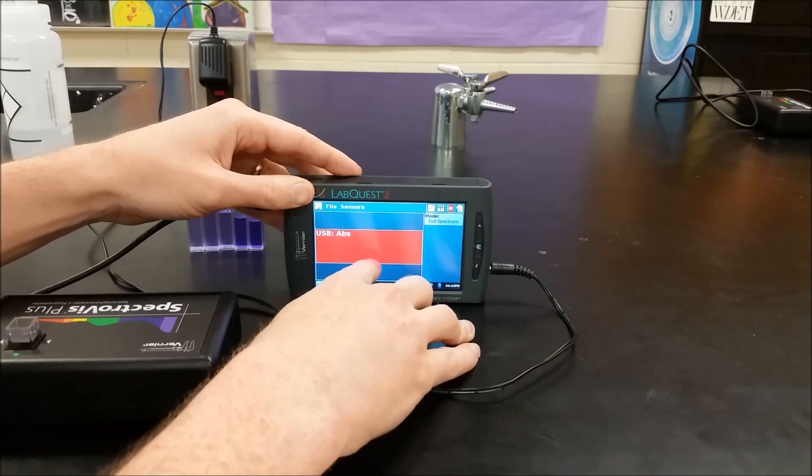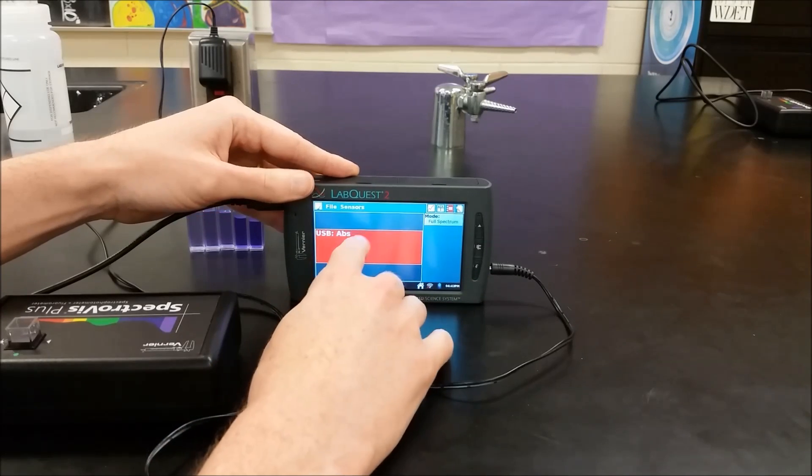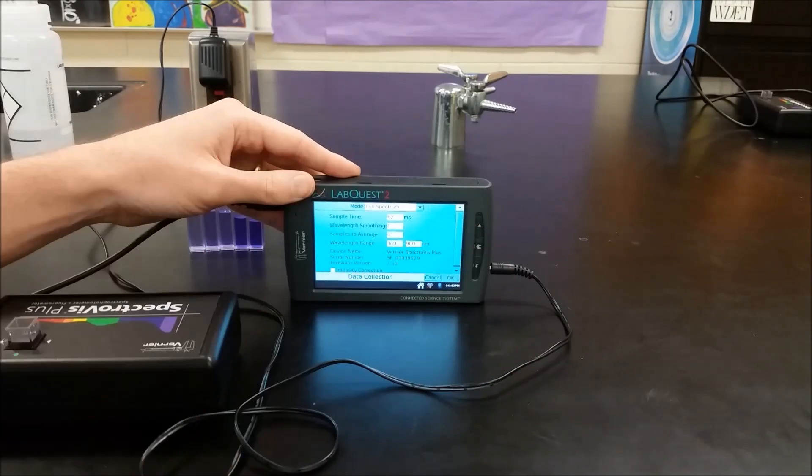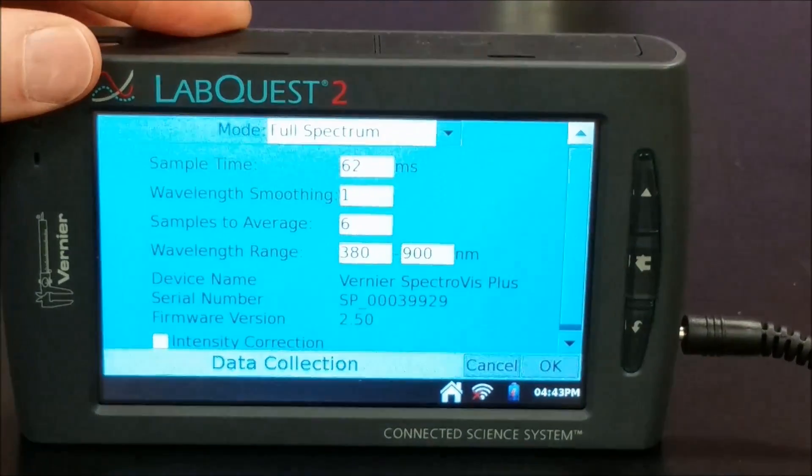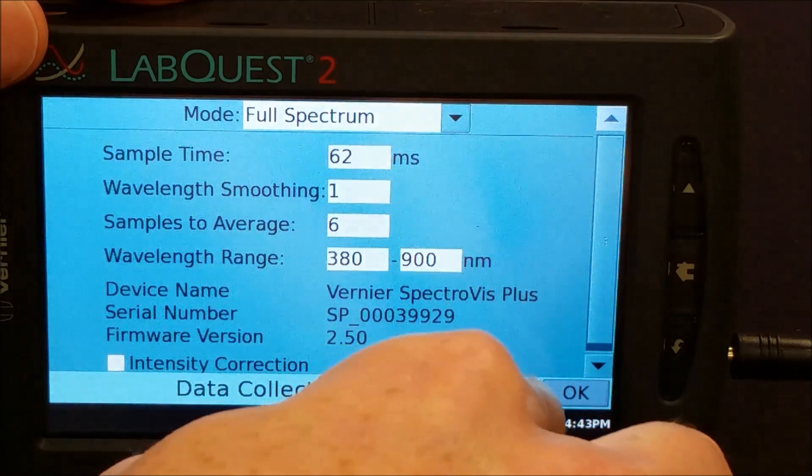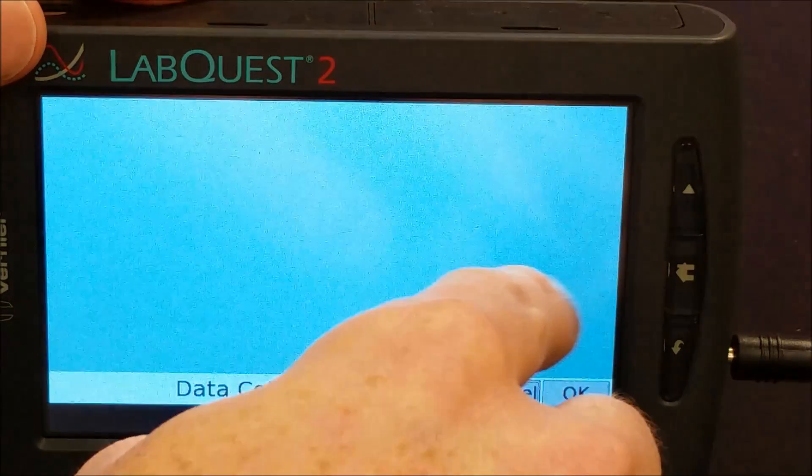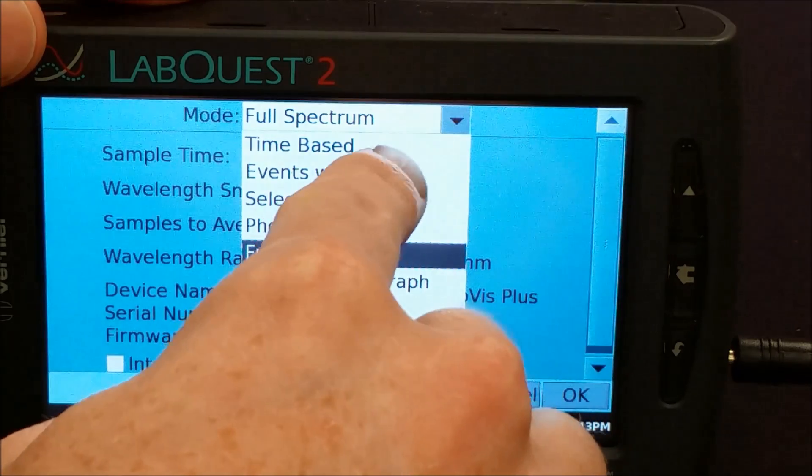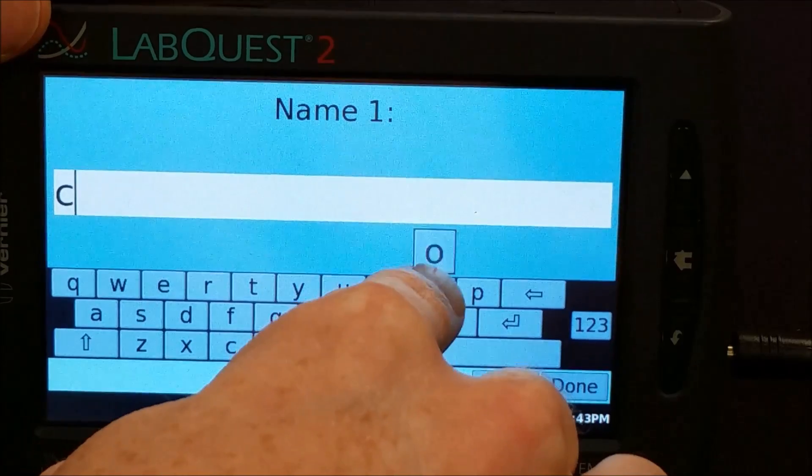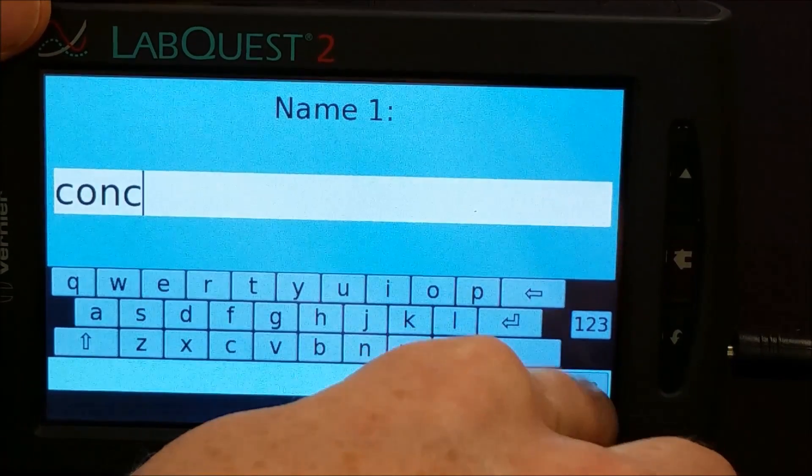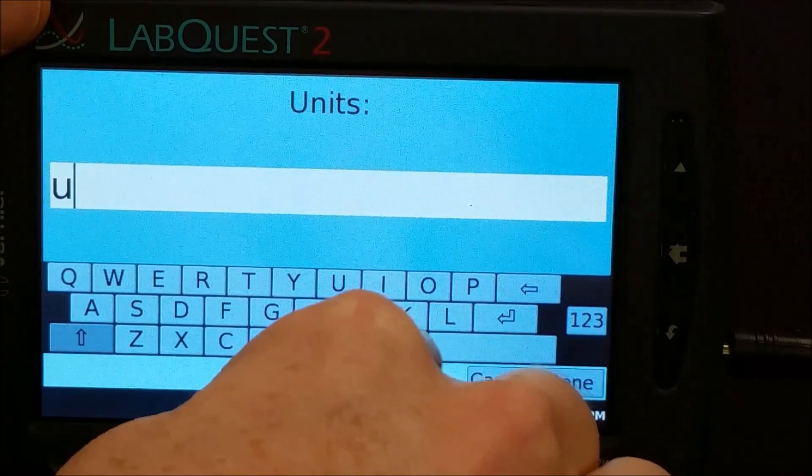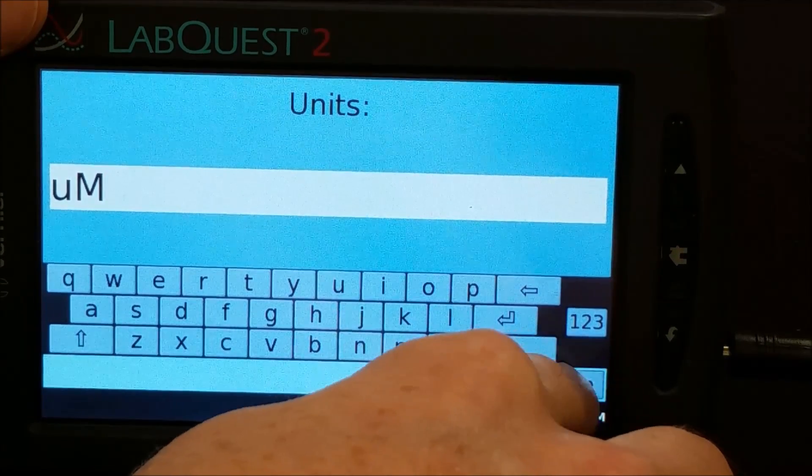So now it should give us a reading of zero, but currently we don't have it set to read because it's on full spectrum. So we're going to now go ahead and zoom in so we can follow along nicely. So we're going to click on Mode where it says Full Spectrum, and we're going to change that to Events with Entry. We want to plot concentration versus absorbance. So the machine is going to read the absorbance for us, and we're going to manually type in the concentrations. And these are going to be in micromolar.